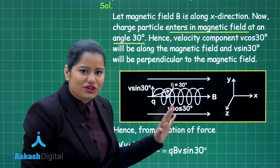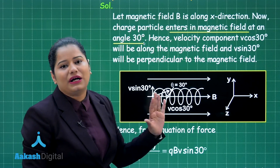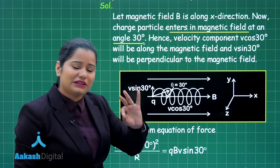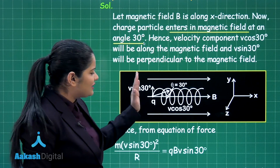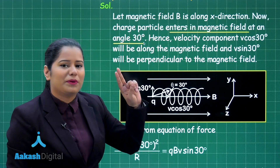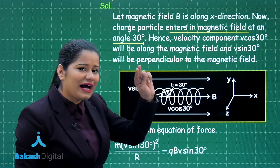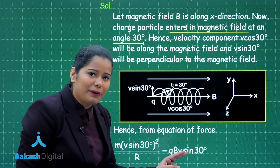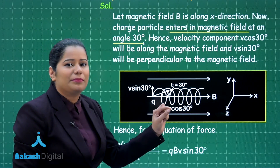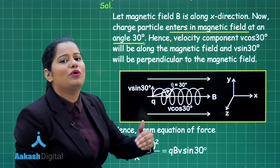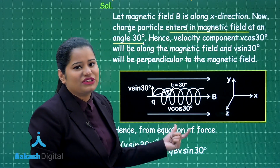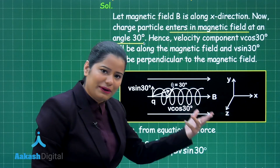You can explain this helical path in two ways. Theoretically, you can write that V sin 30 is perpendicular to the magnetic field, causing circular motion, and simultaneously the particle covers horizontal distance because of the parallel component of velocity V cos 30, which is parallel to the magnetic field.